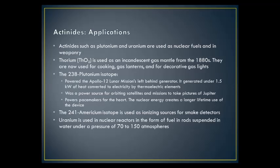Actinides are used in different fields. Plutonium and uranium are used as nuclear fuels and in weaponry. Thorium was used as an incandescent gas mantle from the 1880s and is now used for cooking gas lanterns and decorative gas lights. The ²³⁸Pu isotope powered the Apollo 12 lunar mission as a left-behind generator, generating under 1.5 kW of heat converted to electricity by thermoelectric elements. It has also been a power source for orbiting satellites, missions to photograph Jupiter, and pacemakers for the heart — with nuclear energy creating a longer device lifetime. The ²⁴¹Am isotope is used as an ionizing source for smoke detectors. Uranium is used in nuclear reactors in the form of fuel rods suspended in water under a pressure of 70–150 atmospheres.